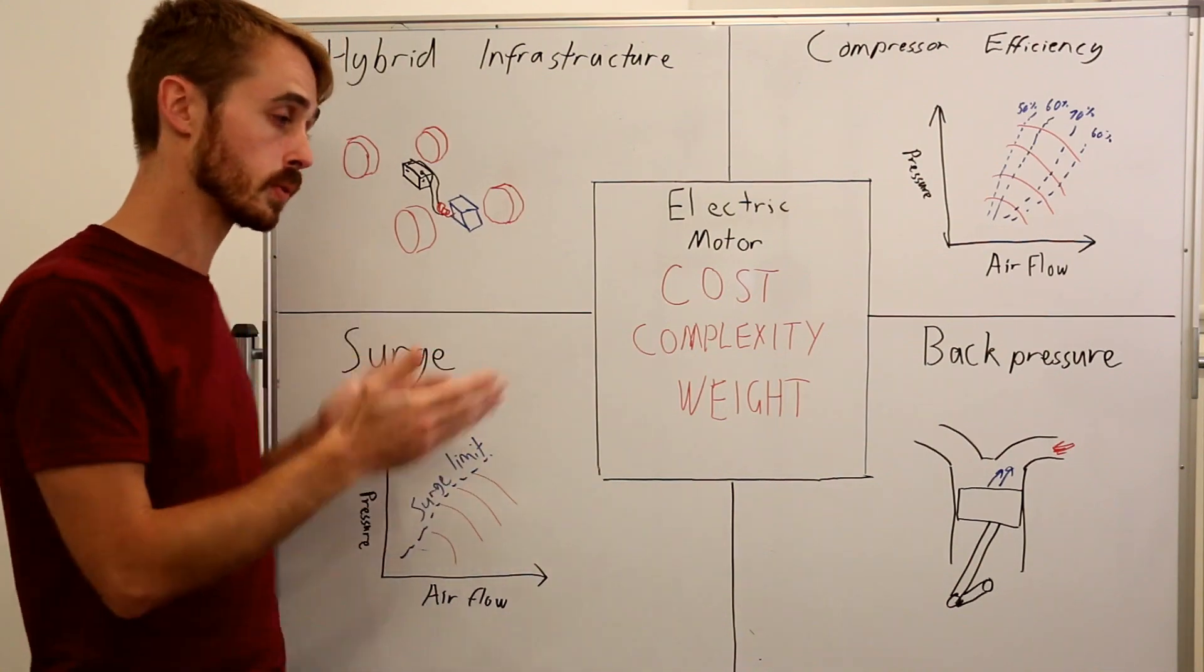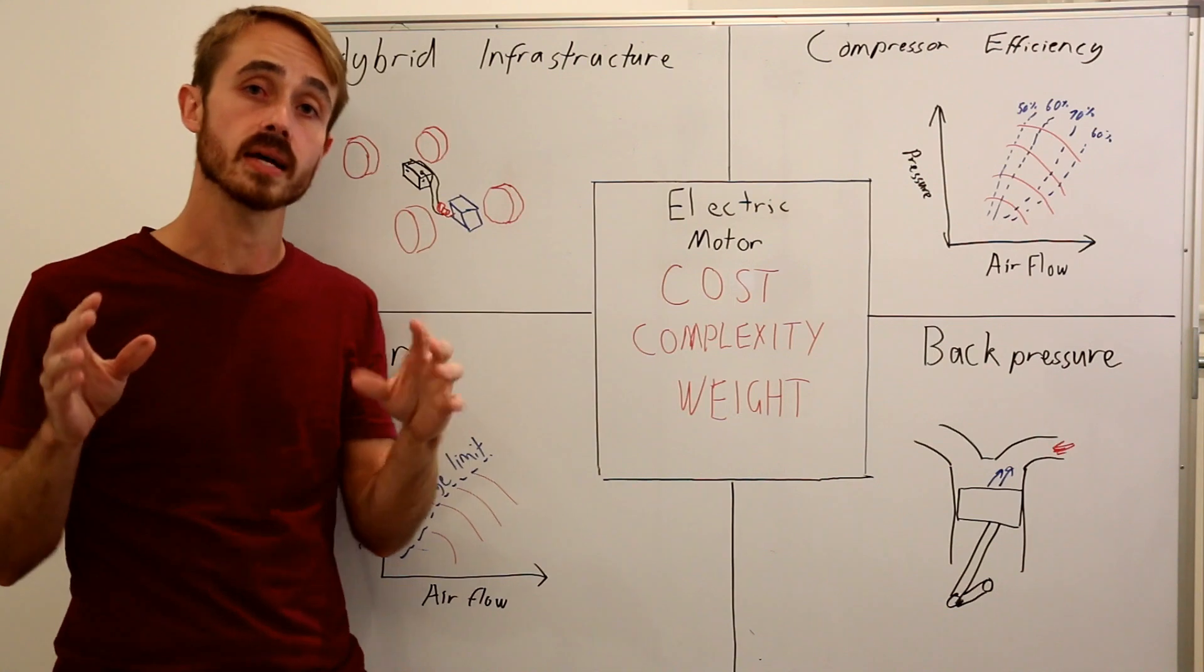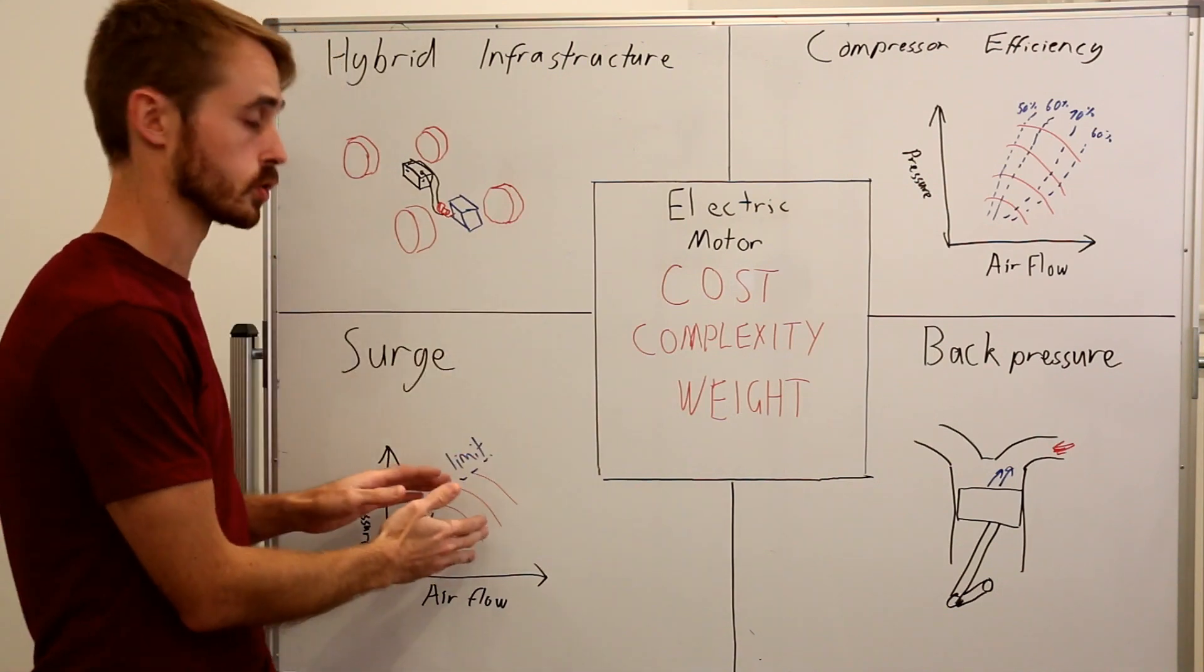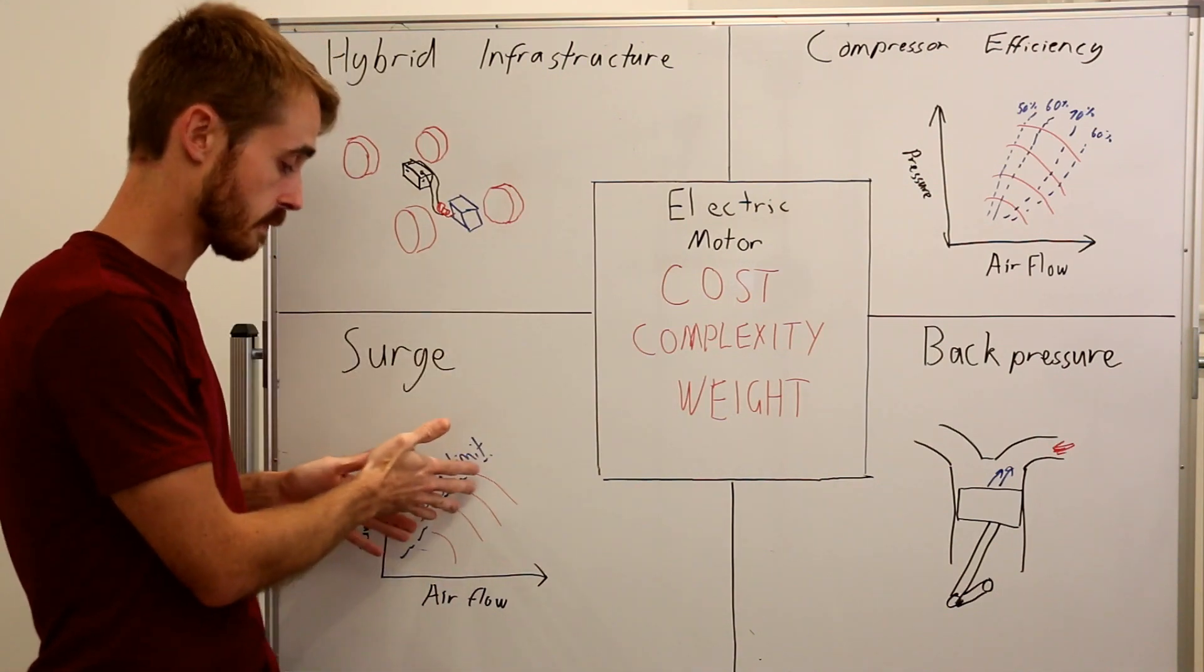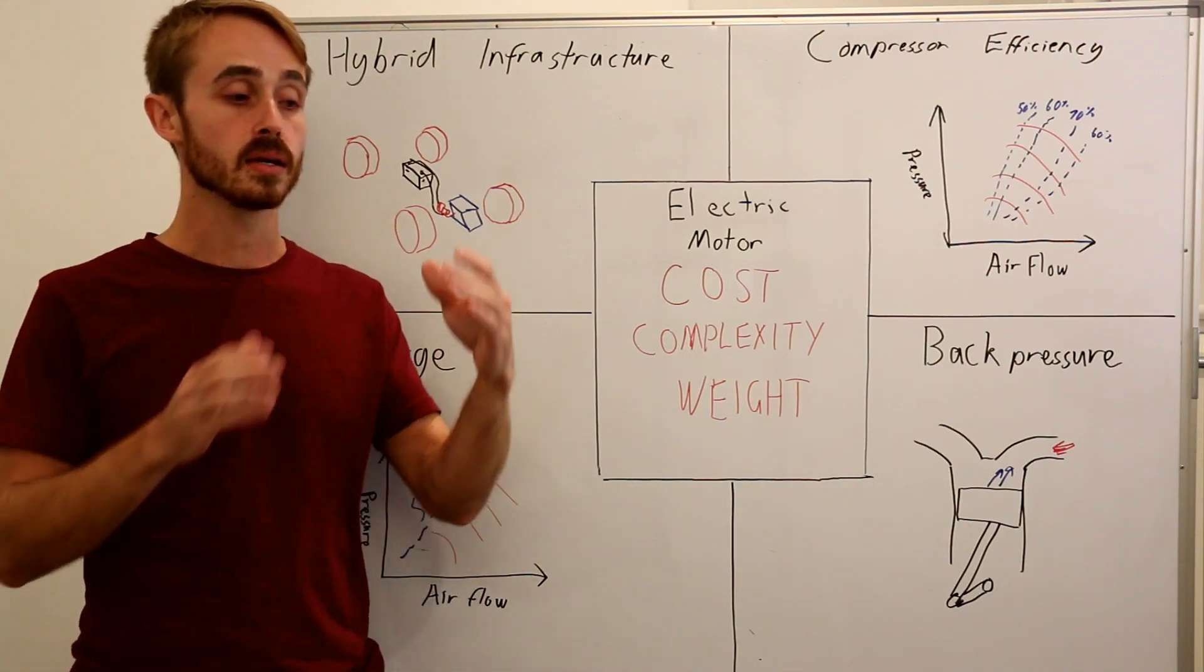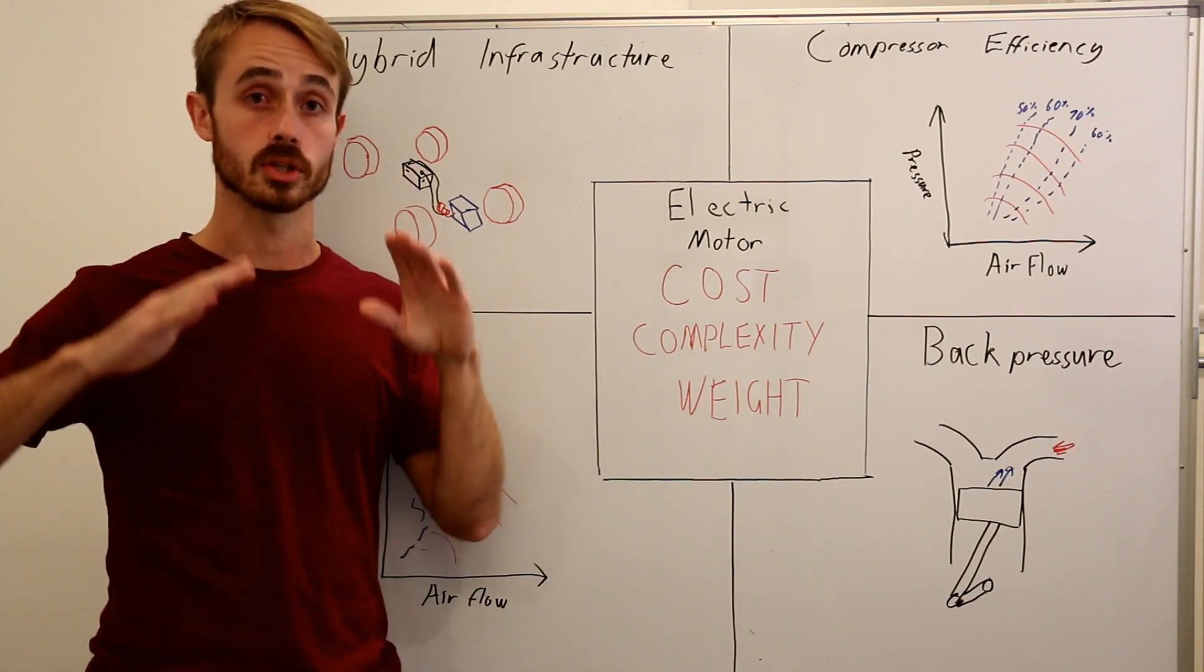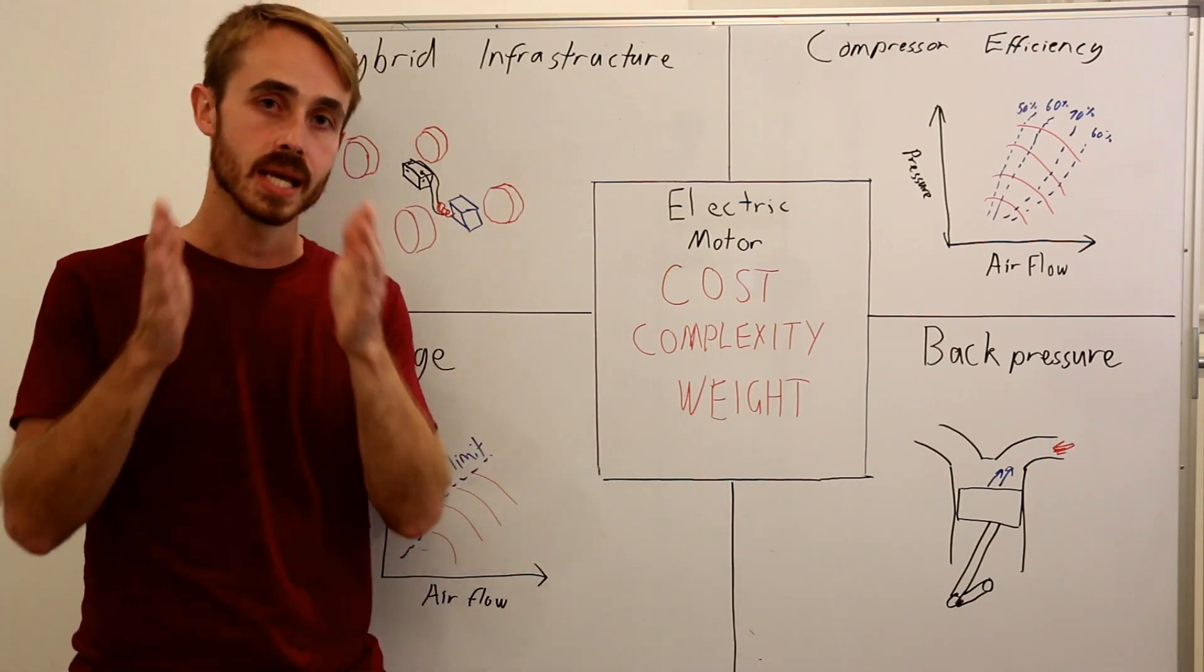if you want to spool really low end on an electric turbo, you have to design your compressor so it's got a really wide surge range. It doesn't have the surge limit over here, it's pushed much further this way. The problem with that is that any compressor that has very favourable surge characteristics generally won't be as efficient in